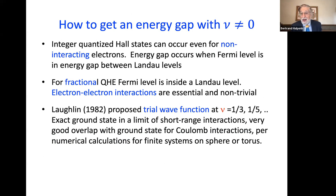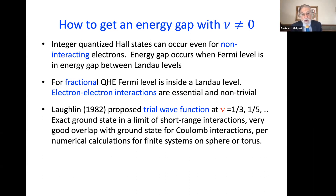How do you get an energy gap in a system such that nu is different from zero? Integer quantized Hall states can occur even for non-interacting electrons. The energy gap occurs because when the Fermi level is in the energy gap between two Landau levels, quantization of energy can happen. But for the fractional quantized Hall effect, the Fermi level is inside a Landau level. If you didn't have electron-electron interactions, the system would be completely degenerate — there'd be no gap at all. So electron-electron interactions are absolutely essential and not trivial to produce a fractional quantized Hall effect, and it took a while to figure out how that could happen.